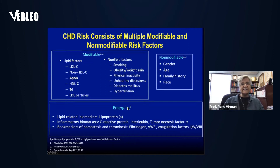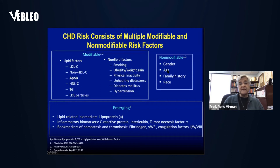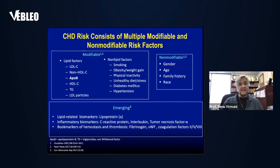Coronary heart disease risk factors consist of multiple modifiable and non-modifiable factors. Modifiable lipid factors include LDL cholesterol and ApoB. Non-lipid modifiable factors include smoking, obesity, physical inactivity, unhealthy diet, stress, diabetes mellitus, and hypertension. Non-modifiable factors are age, family history, and race. Emerging trends include lipid-related biomarkers like lipoprotein A, inflammatory biomarkers such as C-reactive protein, interleukin, and tumor necrosis factor, and biomarkers of hemostasis and thrombosis like fibrinogen, von Willebrand factor, and coagulation factors.